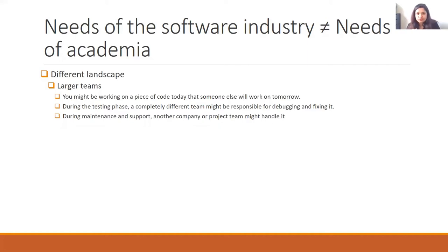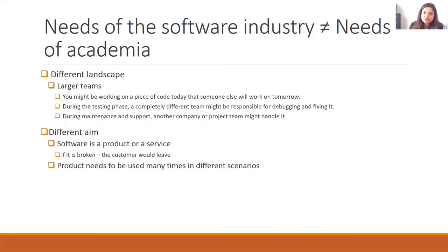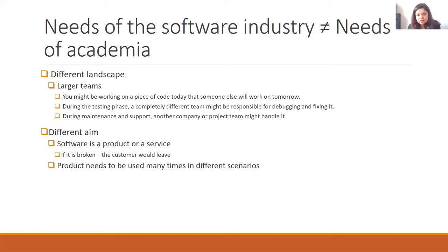I'm kind of playing devil's advocate here, saying, why do we need this? In industry there's a different aim — software is the product you sell, or a service you offer. And so if it's broken, the customer would leave, your profits would vanish. The product needs to be tested for many different situations and scenarios. In science, however, you often only use a piece of code once for running your analysis, and then it's done. You move on to the next project and create an entirely different piece.